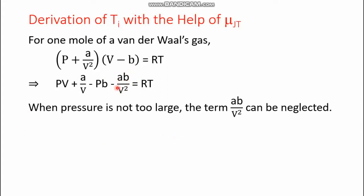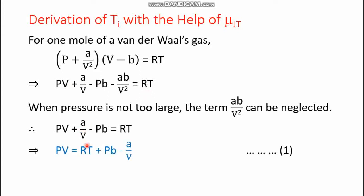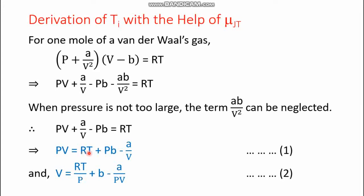At low pressures, the ab/v² term is very small and can be neglected. After neglecting it, three terms remain on the left-hand side and RT on the right. Rearranging gives equation number one: pv = RT + pb − a/v. On the other hand, dividing the right-hand side by p gives equation number two: v = RT/p + b − a/pv.